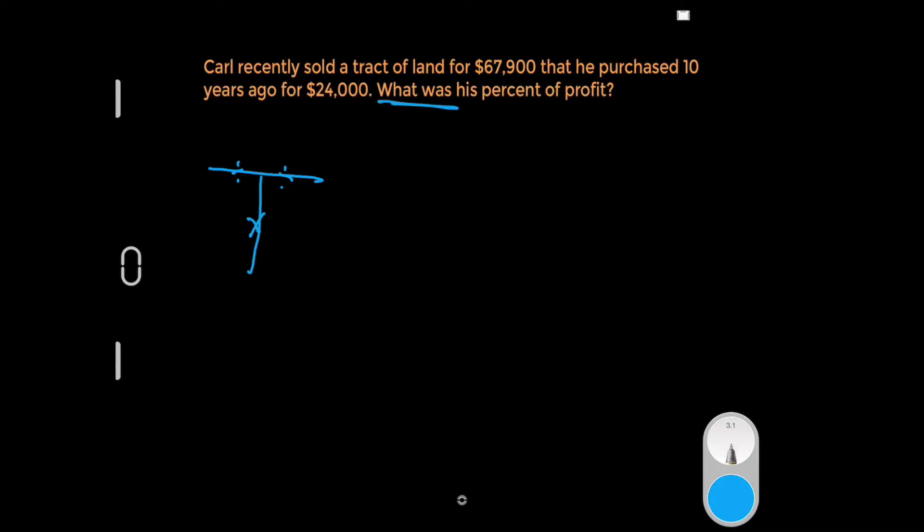We're looking for a rate of profit, which means up top we're going to have an amount of profit. And we know all profits and all losses are based off of what you originally paid. All right, now that we've labeled the T-bar, let's try to put some of these numbers in there.